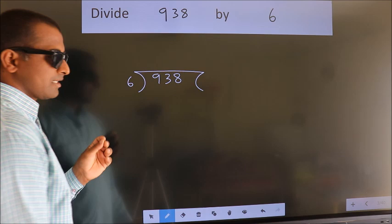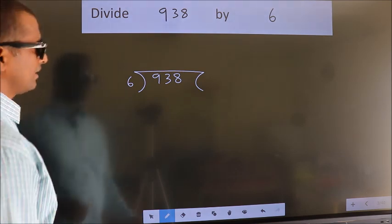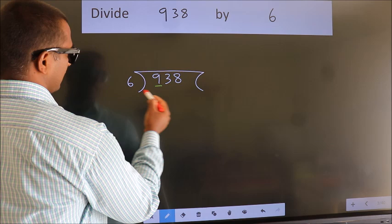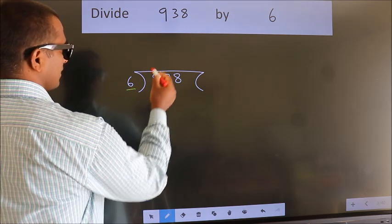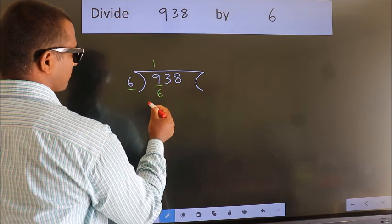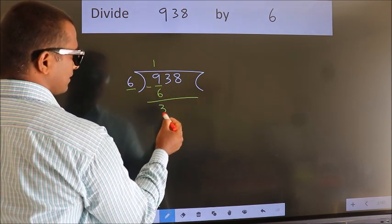This is step 1. Next, here we have 9, here 6. A number close to 9 in the 6 table is 6×1=6. We should subtract. We get 3.